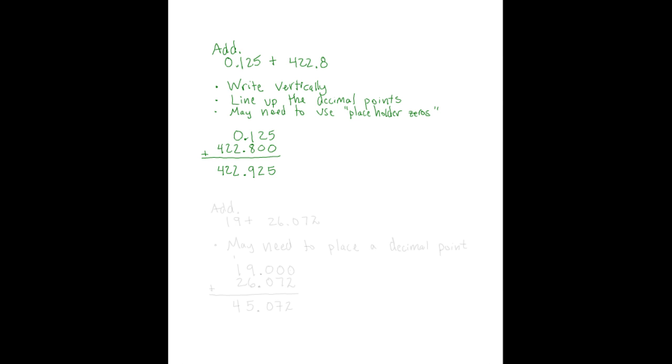Let's try another problem. The instructions are to add. This time we're given 19 plus 26.072. Sometimes you have to add a decimal point before you can add two numbers together. The number 19 doesn't have a decimal point in it, but we know that 19 represents a 1 in the tens place and 9 in the ones place, which means that the decimal point is there. It's just hidden. We need to add it to the right of the 9.